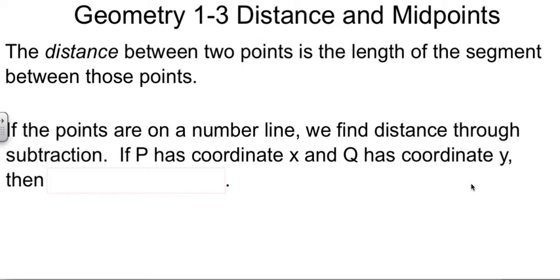We'll start with the easy case. If it happens to be on a number line, then the distance is nothing more than subtraction. If point P is at x and point Q is at y, just two values on the number line, then the distance between P and Q is the absolute value of the difference, and you can subtract in either order. It doesn't matter. Because you're doing the absolute value, it's going to come out positive regardless.